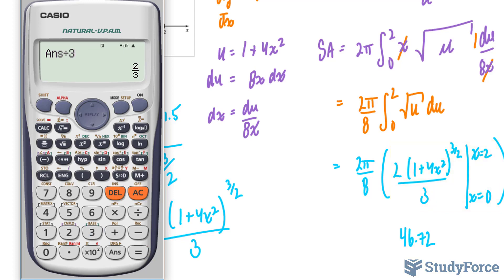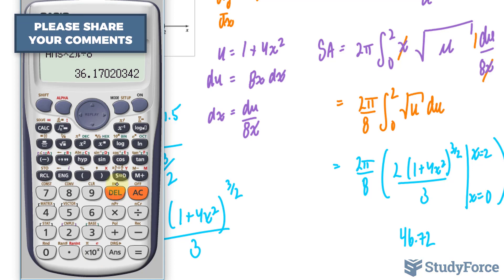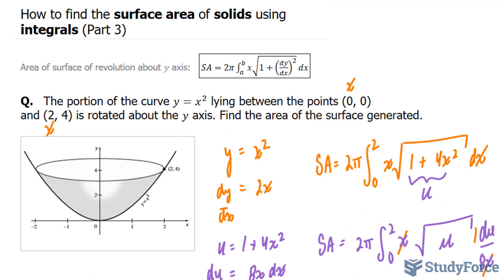So 46.72 minus 2 thirds gives us, times this part now, 2 times π, divided by 8. And this gives us a surface area of 36.17, or simply 36.2. Our surface area is 36.2 units squared. There you have it. That is how to find the surface area of solids using integrals.